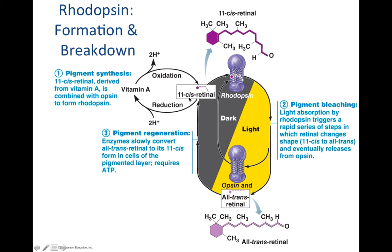Vitamin A is oxidized to become cisretinal. Cisretinal is the inactive form. When retinal absorbs light, it becomes transretinal, and you can see the conformational change in its structure right here — this straight line of this carbon chain right here. It's transretinal in the light, compared to cisretinal as this bent tail here in the dark.